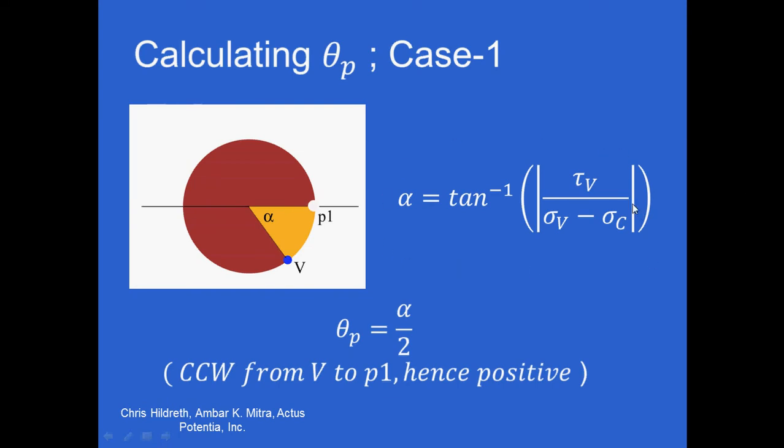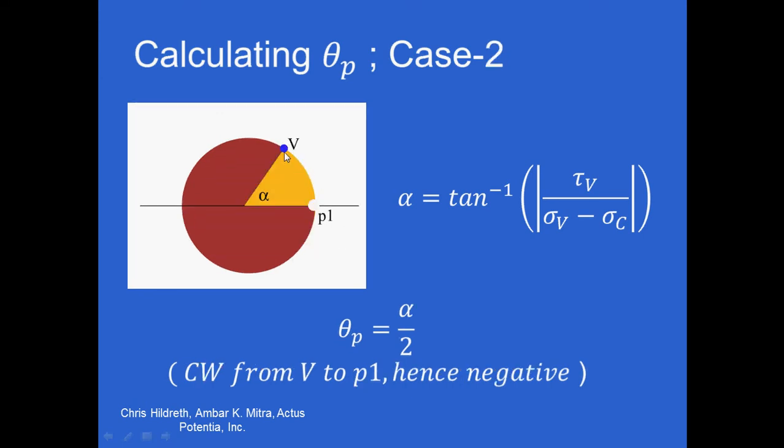As far as sign conventions go, the angle is positive when it's moving in a counterclockwise direction. You can look at here, because this one is moving counterclockwise towards p1, it's moving towards the positive part of the circle. In this case, it's moving clockwise towards sigma p1, which is towards the negative half of the circle. Thus, clockwise is negative.